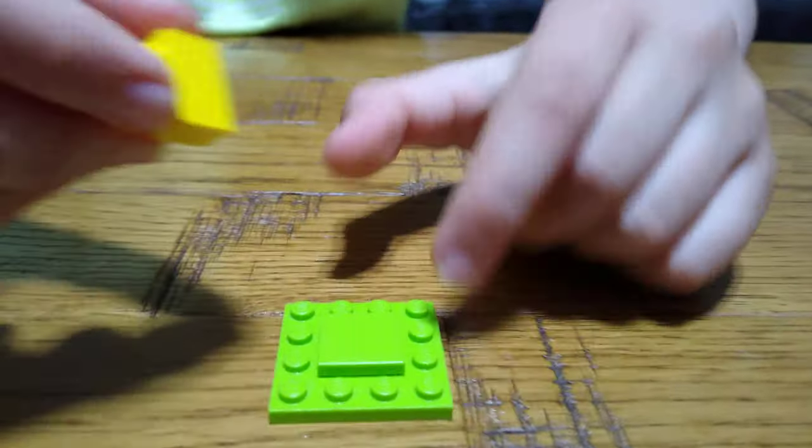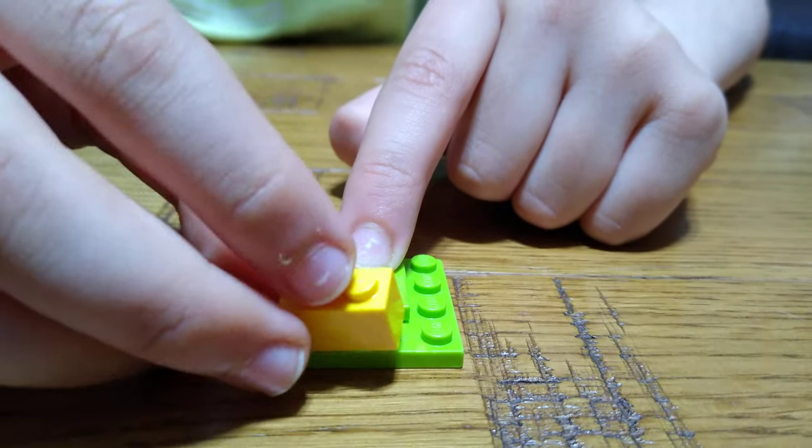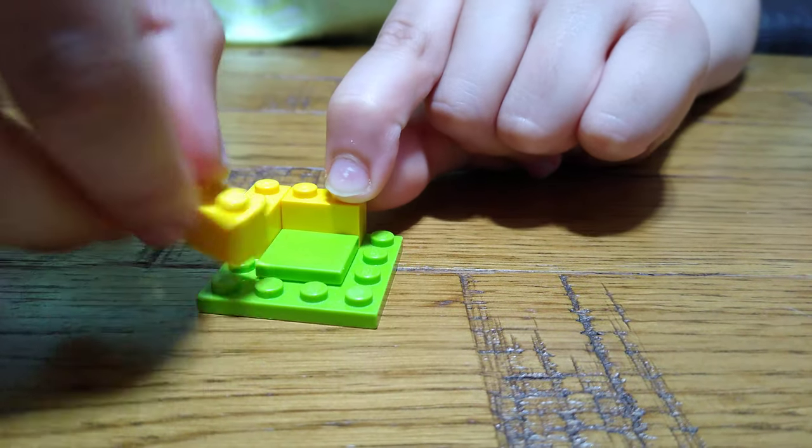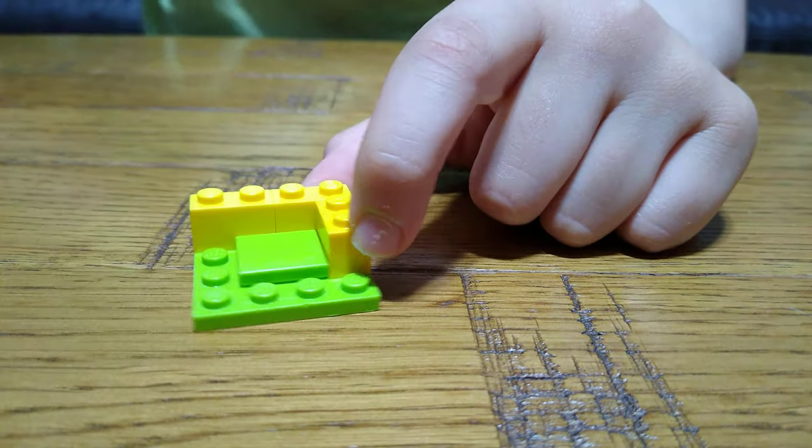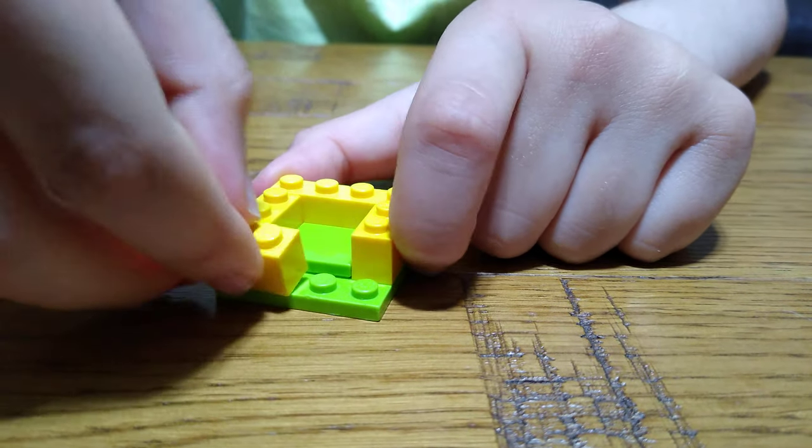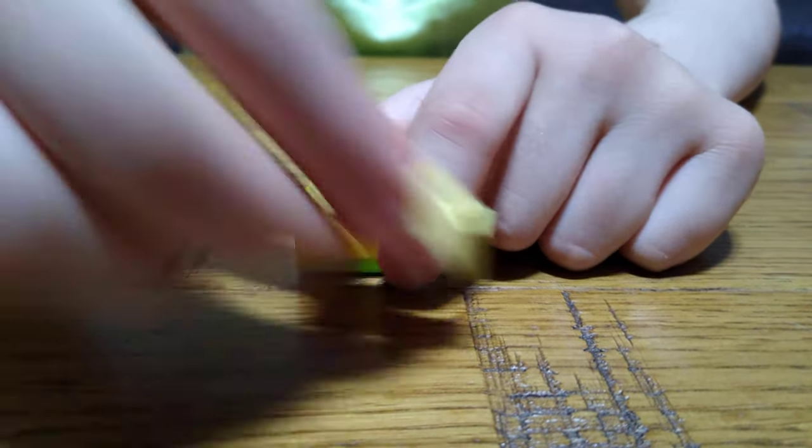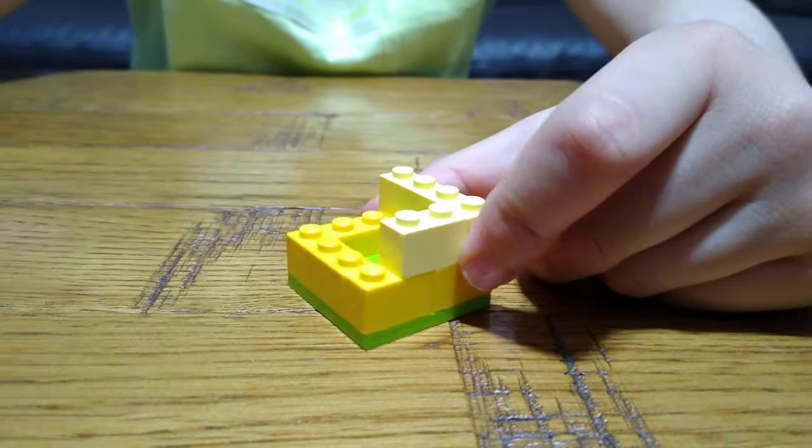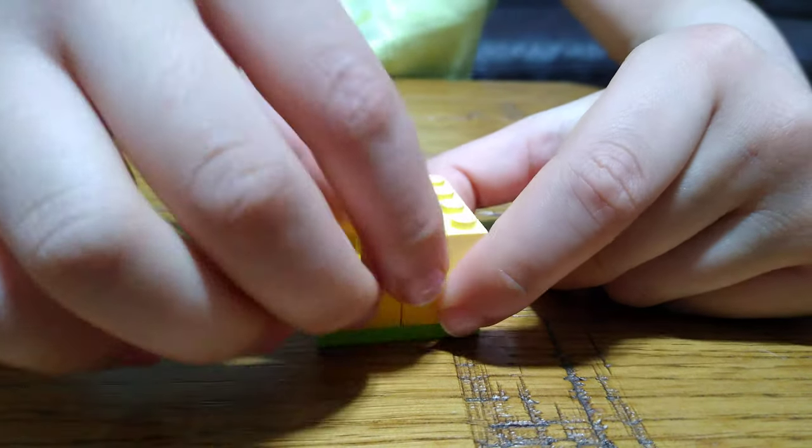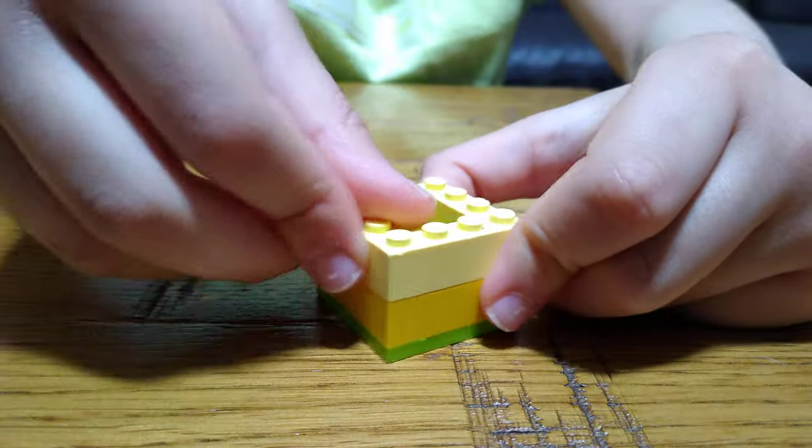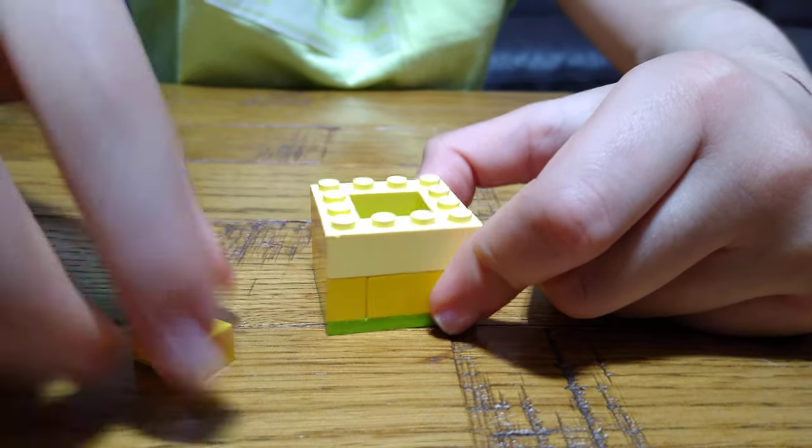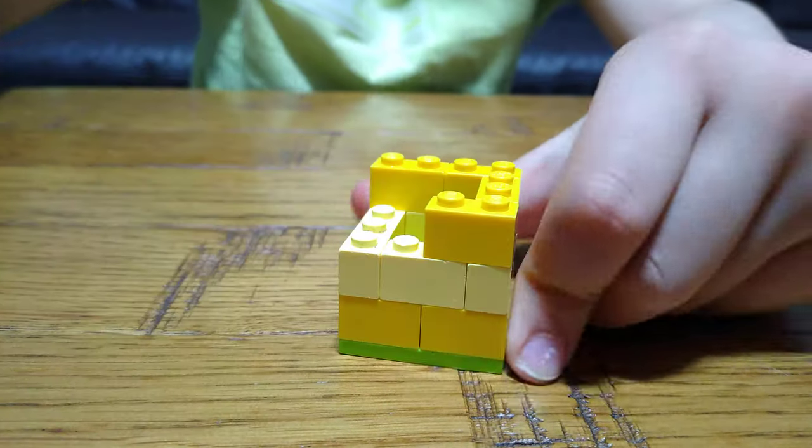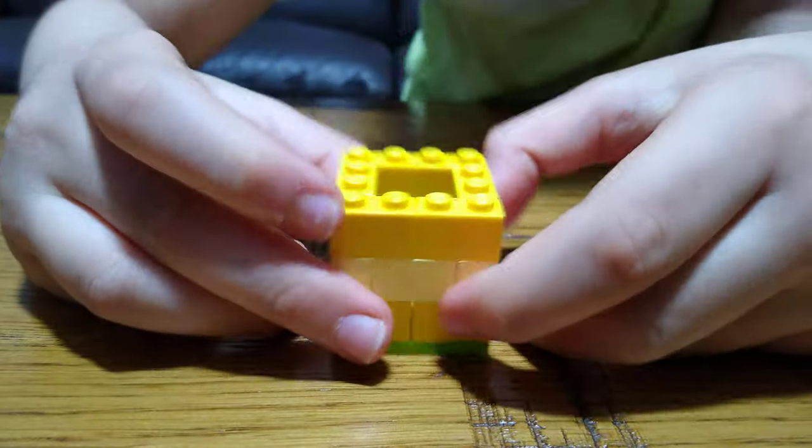to here. Get six of these, one, two, three, four, five, and six. And get two of these and two of these. And then another six of these. So we've done that.